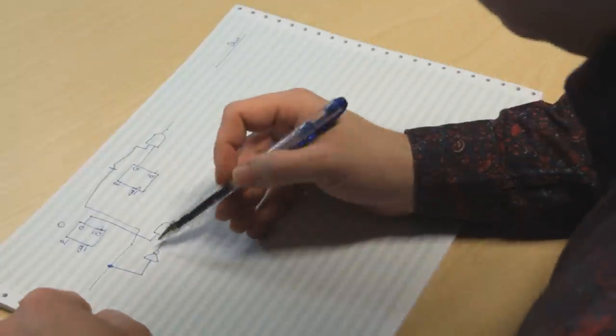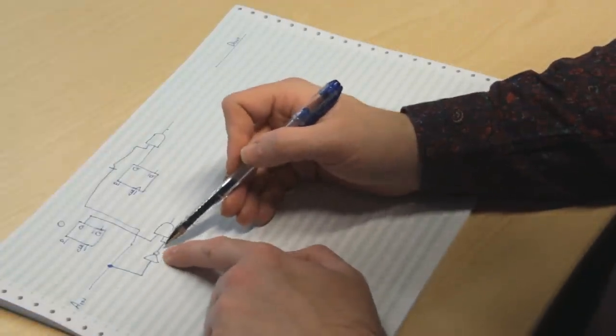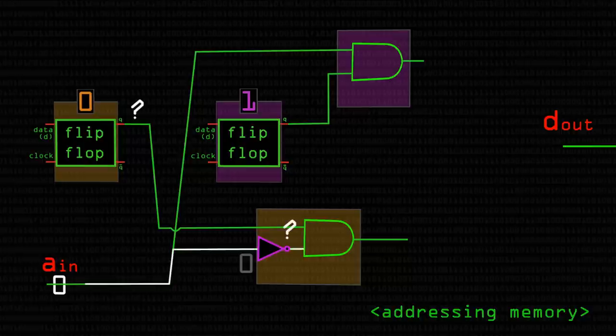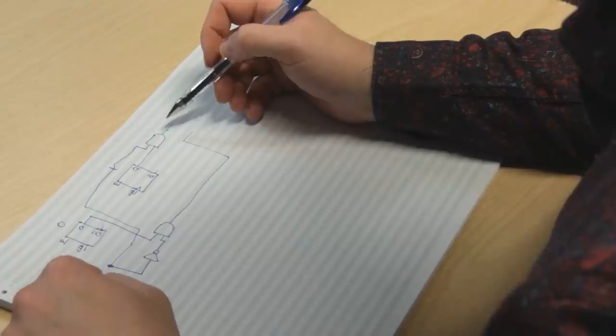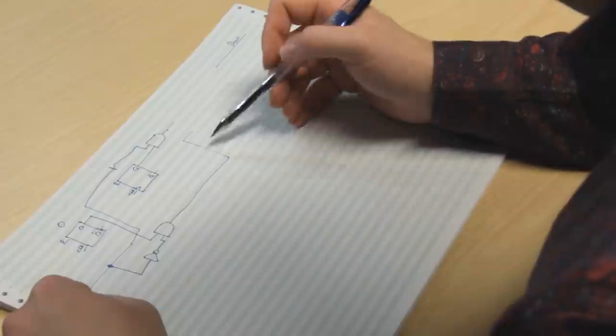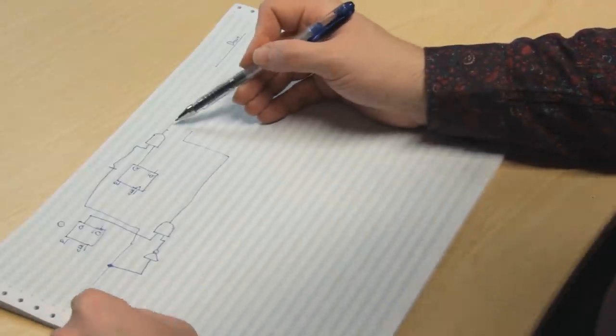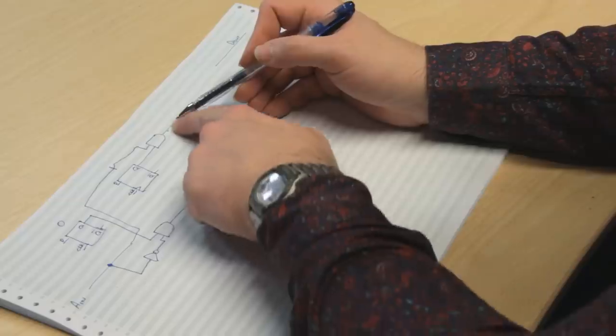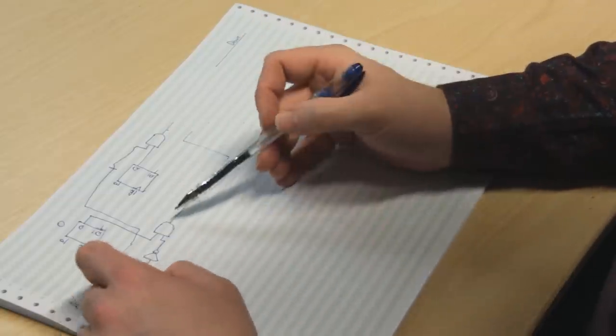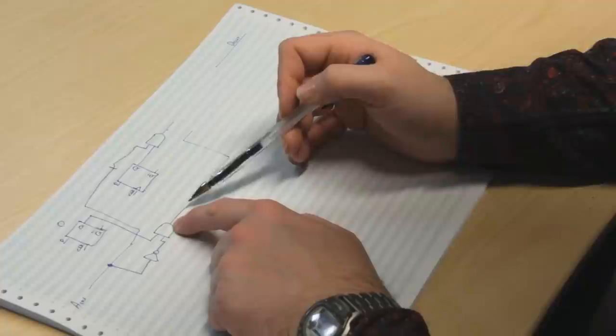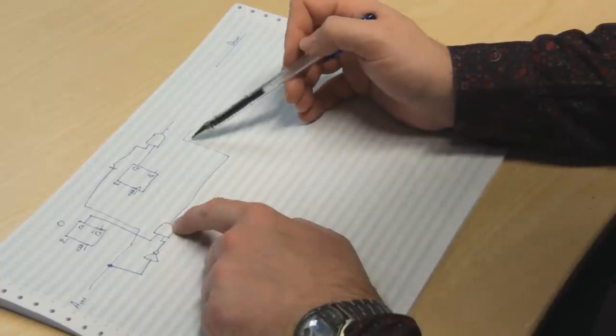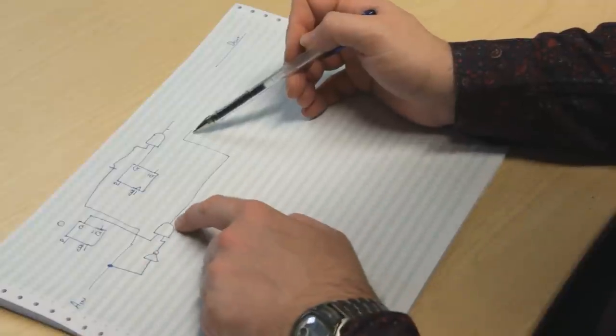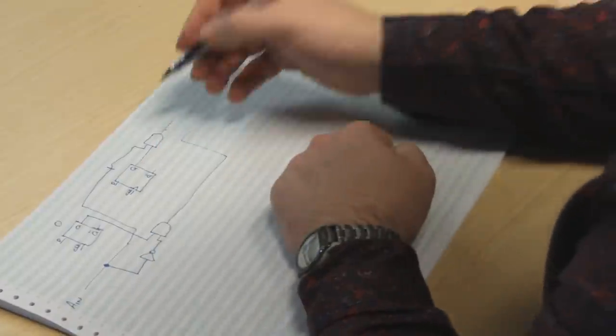So now whenever AIN contains zero, this output here, this NOT gate contains one, and we AND that with this thing here. So we now have two values. If AIN is zero, then this one has the value of Q, and this one is guaranteed to be zero, because that's going to be zero. Anything ANDed with zero is zero, so this will always be zero. If it contains one, this will be zero, because anything ANDed with zero from the NOT gate is zero. And this will contain whatever this value of Q is.